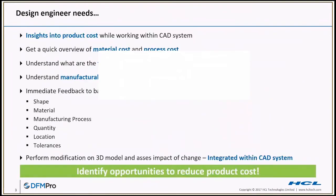Design engineers need the following: insights into product costs while working within their CAD system. They need to get a quick overview of material cost and process costs as they are designing. They need to understand what are the top contributing features that are imposing the extraneous cost, and they need to understand the manufacturability aspects of the design and its impact on cost.